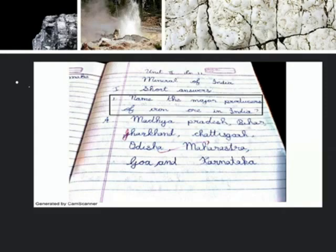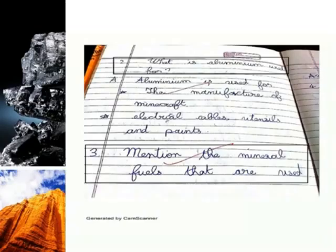Question 2. What is aluminium used for? Aluminium is used for the manufacture of aircraft, electrical cables, utensils and paints.